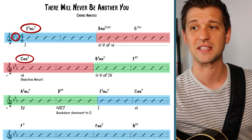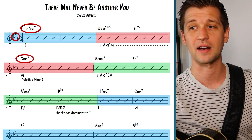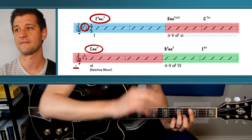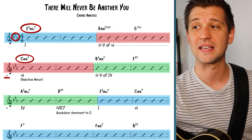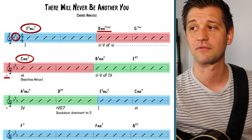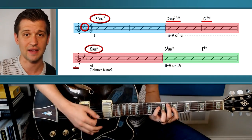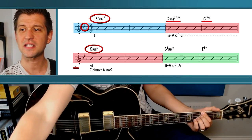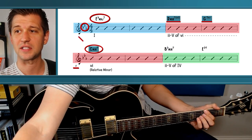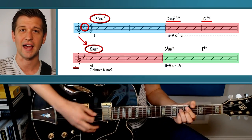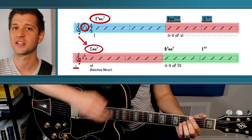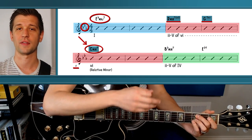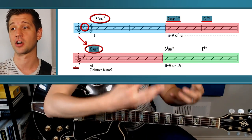When we get to C minor in bar five, we know that is the sixth chord of E flat major, but we have two chords in the way: a D minor seven flat five and a G seven. This is a two-five-one of C minor seven. Whenever you see a half diminished chord followed by a dominant seventh chord resolving to a minor seventh chord, that is a two-five-one in a minor key.